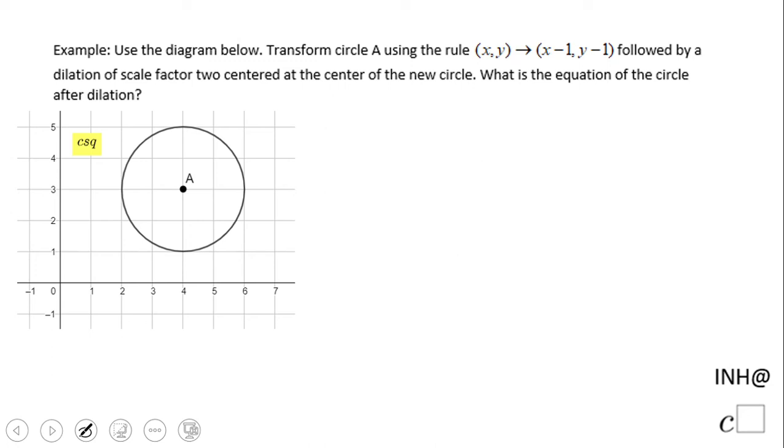Welcome back to Help at C Square. In this example we have a circle and they ask us to transform the circle using this rule, which is a translation. Whenever you see something like that, you should recognize that it's a translation. Then we need to dilate by a scale factor of two.